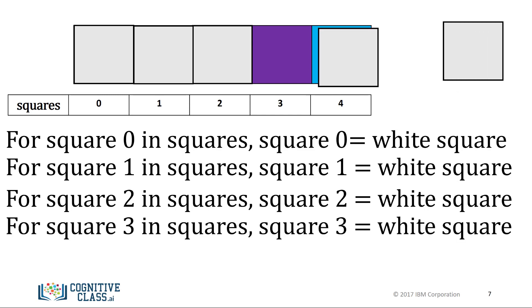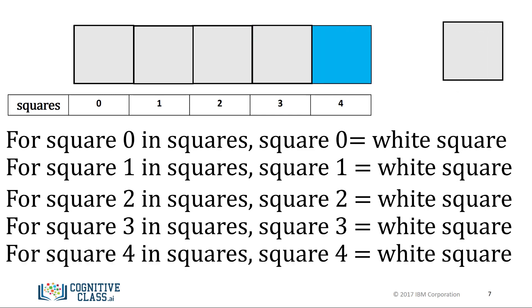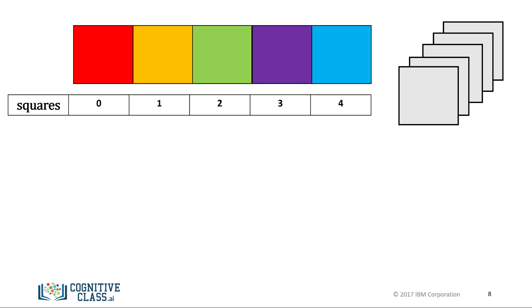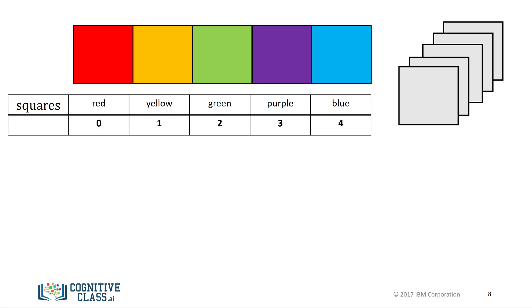We repeat the process for each square. The only thing that changes is the index of the square we are referring to. If we are going to perform a similar task in Python, we cannot use actual squares, so let's use a list to represent the boxes. Each element in the list is a string representing the color. We want to change the name of the color in each element to white. Each element in the list has a corresponding index.